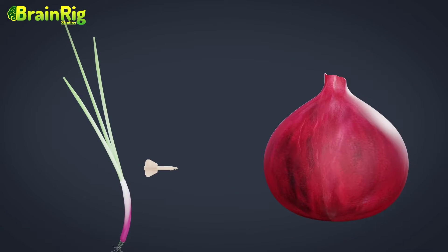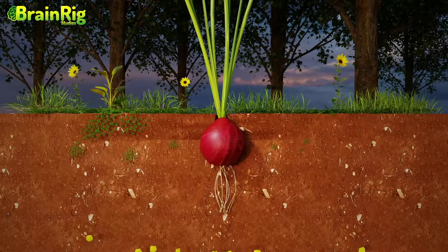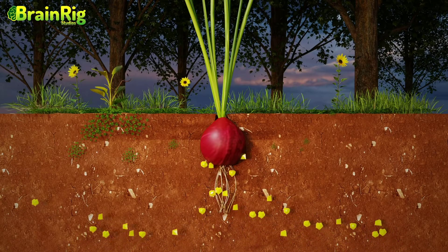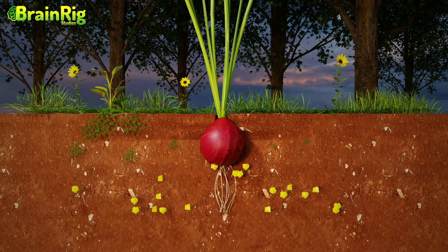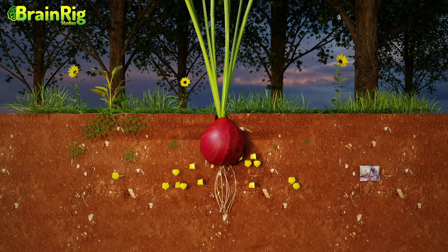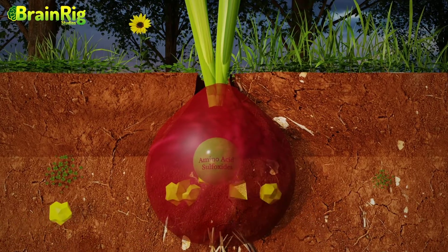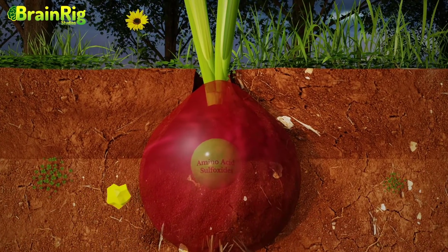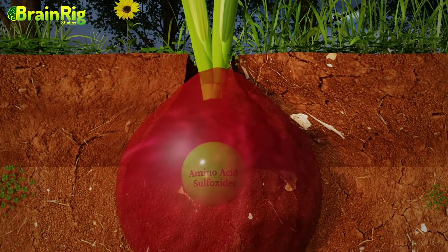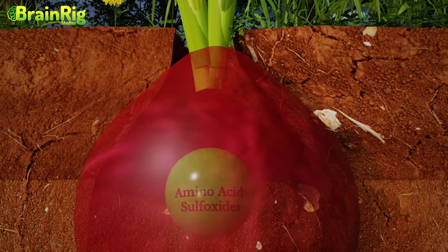In these few months' journey of becoming fully grown from an innocent seedling, aside from absorbing nutrients from the ground, the onion also absorbs one non-metallic chemical element which gave birth to this meme — and that element is sulfur. This sulfur inside the onion is turned into amino acid sulfoxides with time.